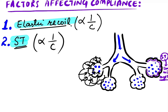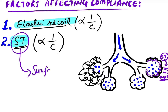Surface tension does not decrease compliance to a very large extent because the lungs contain something called surfactant. Surfactant decreases the surface tension, so it does not affect compliance significantly.